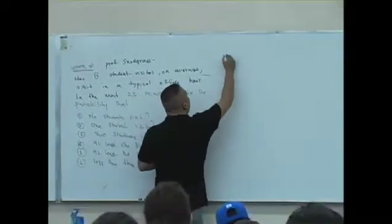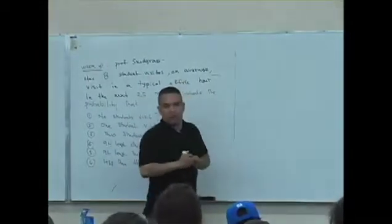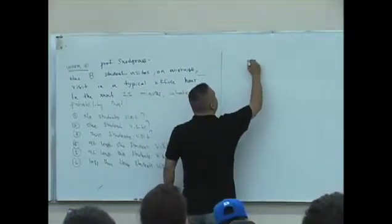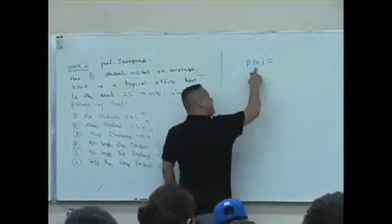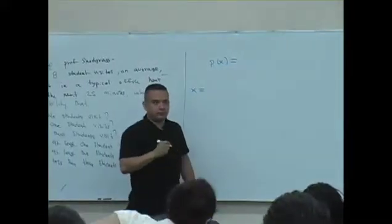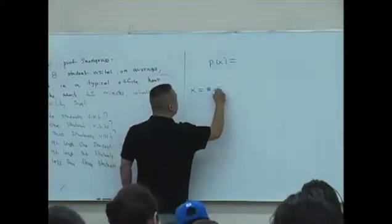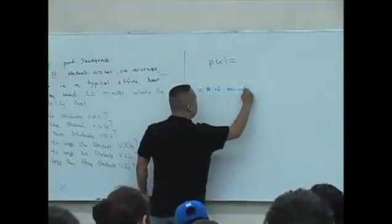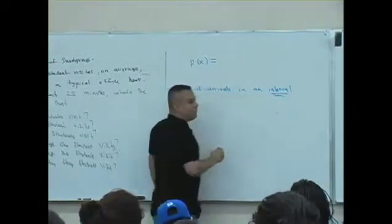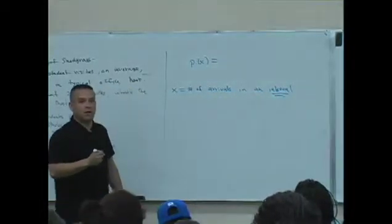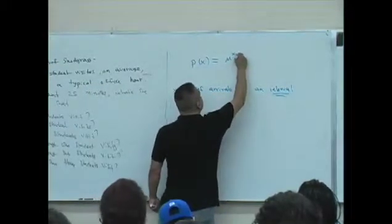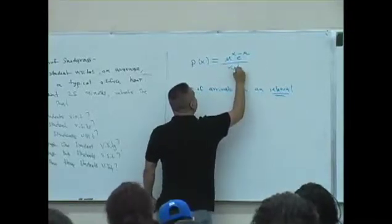Okay, here we go. What distribution did we talk about last week? Poisson. The Poisson distribution — the formula is a probability of x, P(x), where x counts the number of arrivals in an interval. And the probability of these number of arrivals is mu to the x, e to the minus mu, over x factorial.